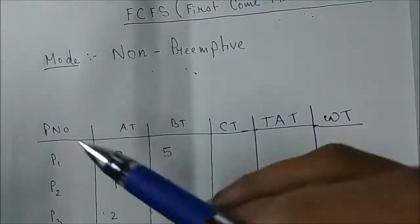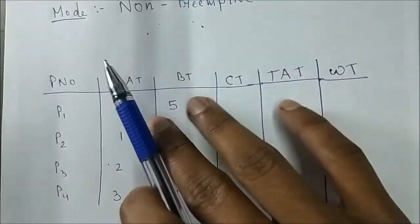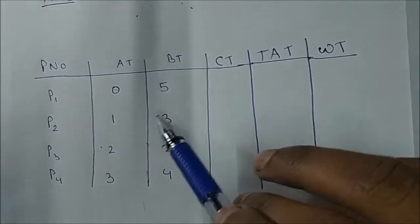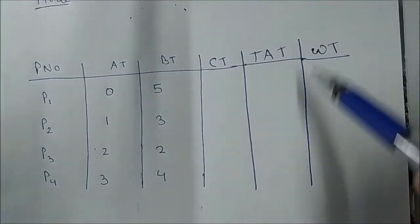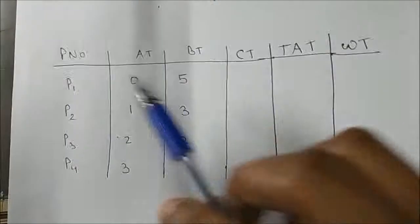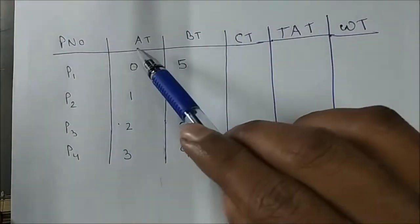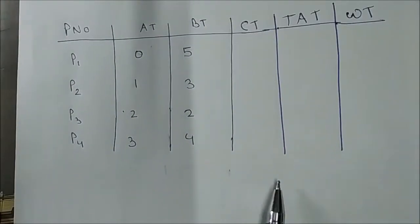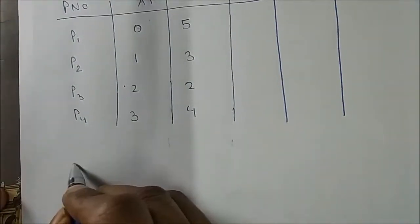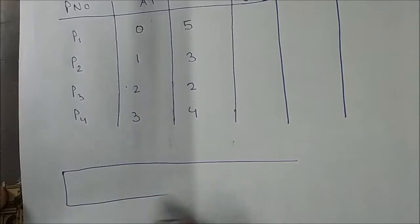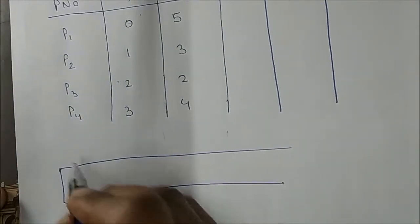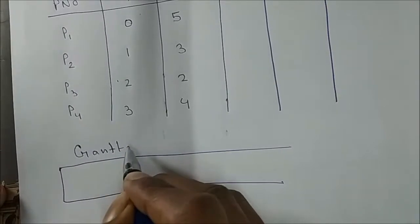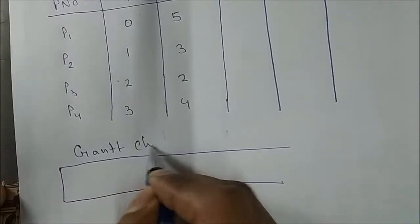They have given process ID, arrival time, and burst time. We'll find the completion time, turnaround time, and waiting time. There are four processes with arrival times starting from zero. Now we'll look at the Gantt chart.